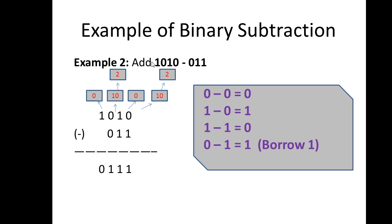Now let's look at another example: subtract 011 from 1010. Write 1010 first, then below it write 011. Starting from the rightmost digit: 0 minus 1 — the fourth rule applies. We take a borrow from the next higher digit, cut that 1 so it becomes 0. This 0 position becomes 10 in binary, which equals 2, so 2 minus 1 equals 1.